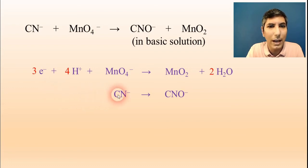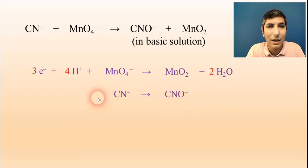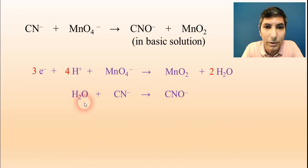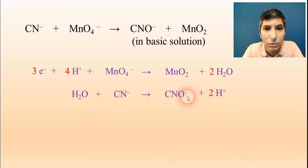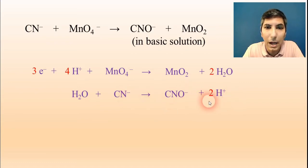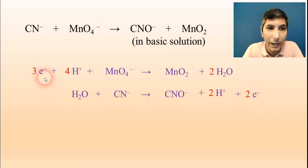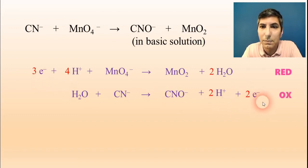In the second half reaction, the carbons and nitrogens are balanced, but the oxygens are not. I have one oxygen on the right side, so I add one water molecule to the left side to balance the oxygens. I then balance the two hydrogen atoms in the water by placing two H+ ions on the right side. On the left side the total charge is −1, and on the right side +2 and −1 gives +1. So −1 versus +1 means I need to place 2 electrons on the right side. This half reaction is a reduction (gaining electrons), and the other is an oxidation (losing electrons).